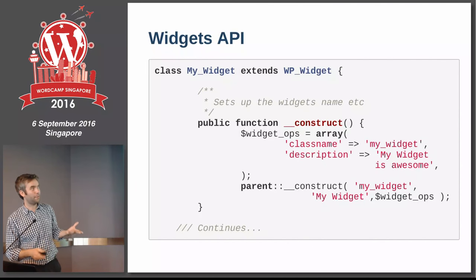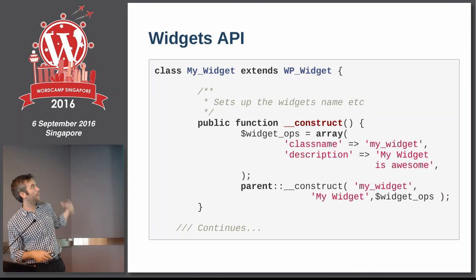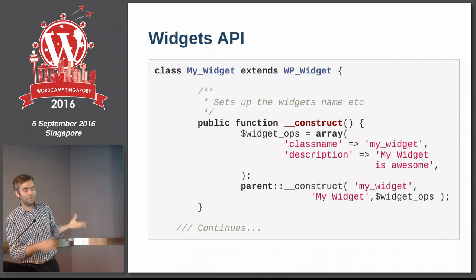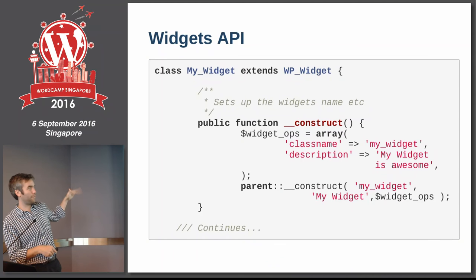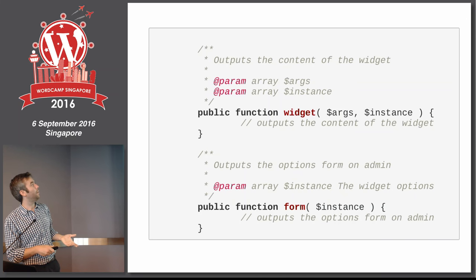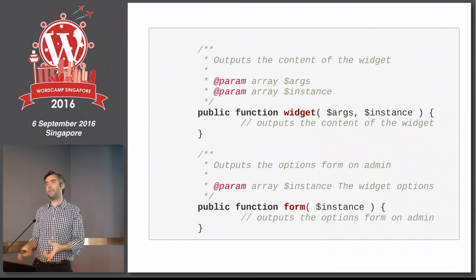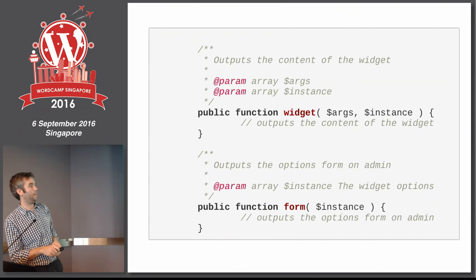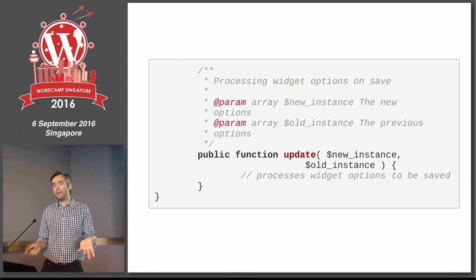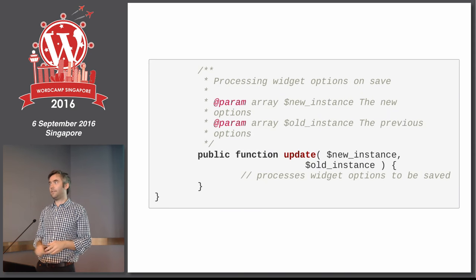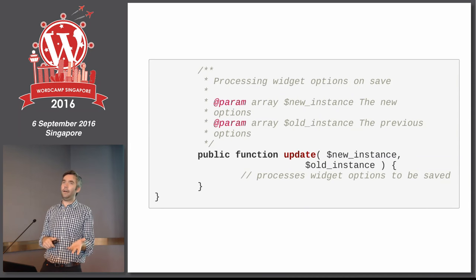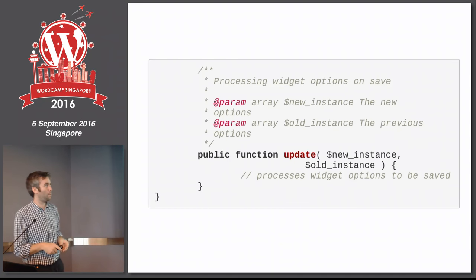This is how the Widget API works. We say `class MyWidget extends WP_Widget`. Then we have a constructor setting the widget name and description. There are a couple of methods: `widget()` — what happens on the front end; `form()` — the form that appears in WP Admin for interacting with the widget; and `update()` — how we record changes, taking the new options and the old options so we can check what's changed.